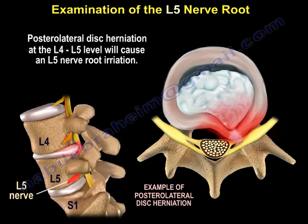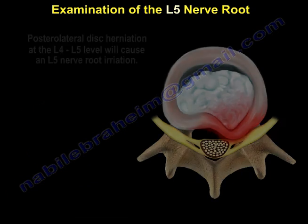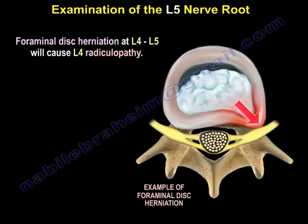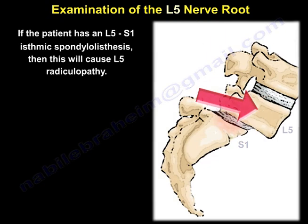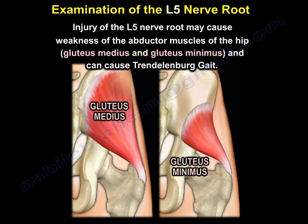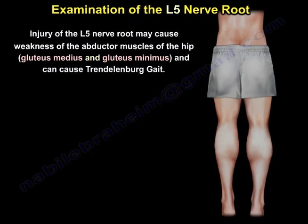A posterolateral disc herniation at L4-L5 will cause L5 nerve root irritation. A foraminal disc herniation at L4-L5 will cause L4 radiculopathy. If the patient has an L5-S1 isthmic spondylolisthesis, this will cause an L5 radiculopathy. The L5 nerve root may cause weakness of the hip abductors — gluteus medius and gluteus minimus — and can cause Trendelenburg gait.